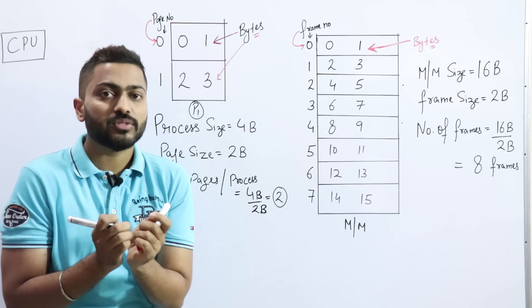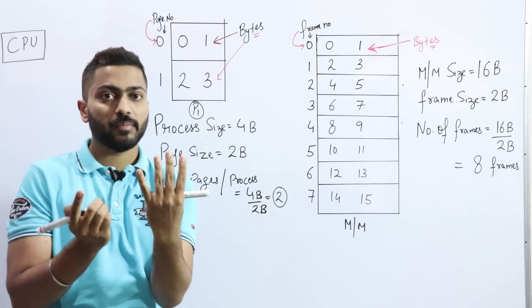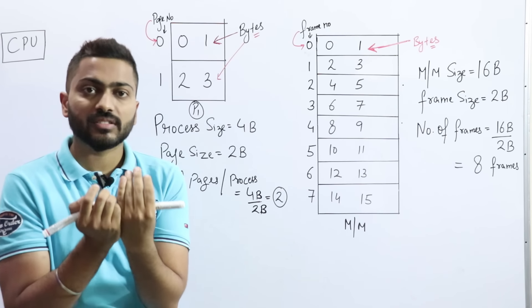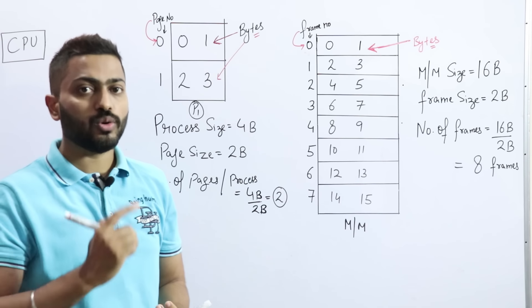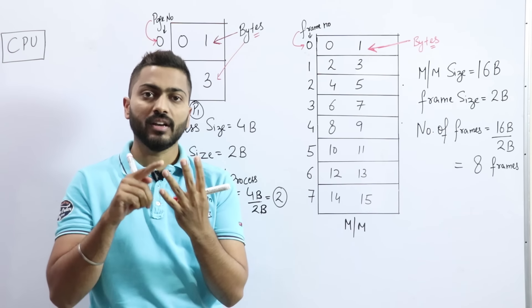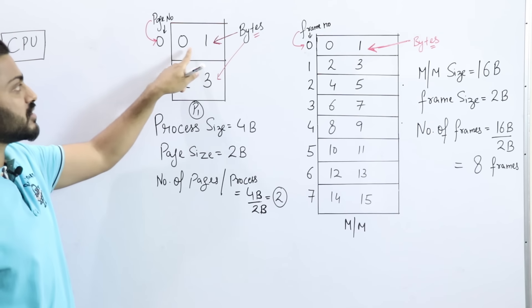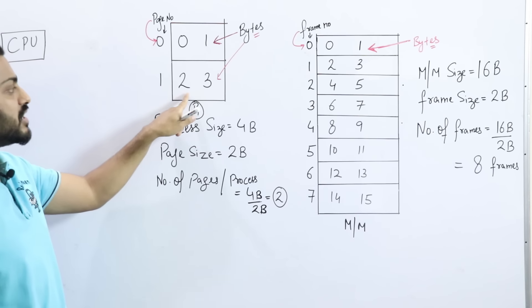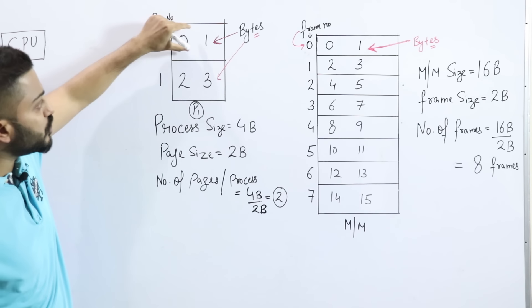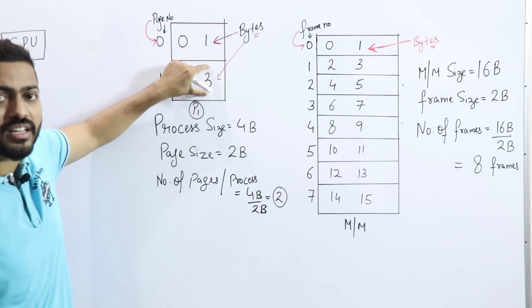The size of the process is 4 bytes, so how many bytes are in it? 4. In 4 bytes, numbering always starts from 0 in binary. So we number them 0, 1, 2, and 3. We have 2 pages: page 0 contains bytes 0 and 1, and page 1 contains bytes 2 and 3.